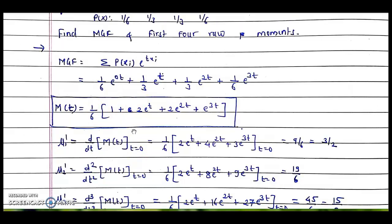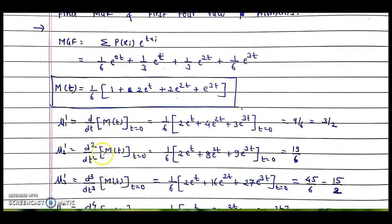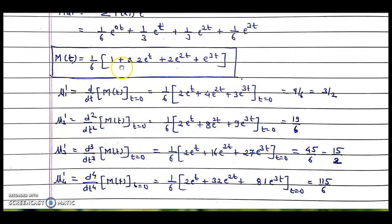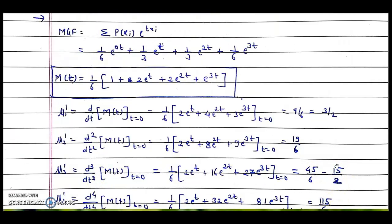Differentiating the MGF and putting t = 0 gives mu_1' = 3/2. The second derivative at t = 0 gives mu_2' = 19/6. Continuing, mu_3' = 15/2 and mu_4' = 115/6. Using the MGF to obtain raw moments is the easiest method, simpler than direct integration or summation. This concludes the topic of moments and moment generating functions.